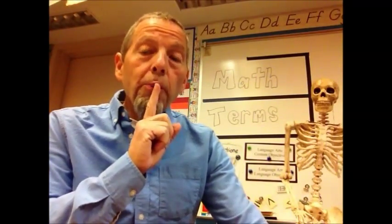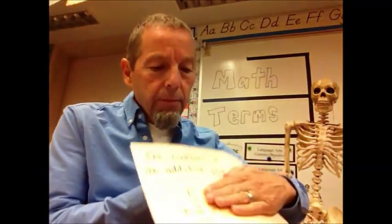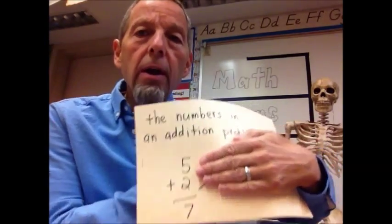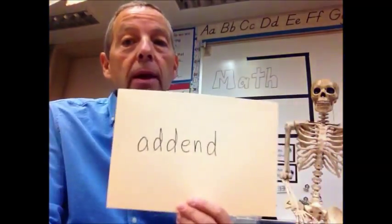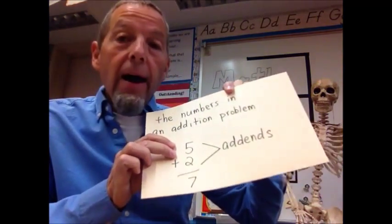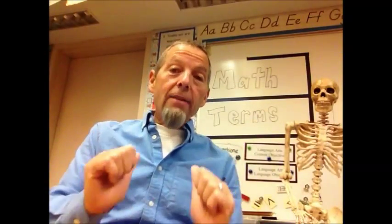Last one. What do you call the numbers that you add in an addition problem? What do you call those numbers right there? The five and the two. What are those called? Those are called add-ins. Add-ins. The numbers that you add in an addition problem. Good for you. Bad for me. No treat.